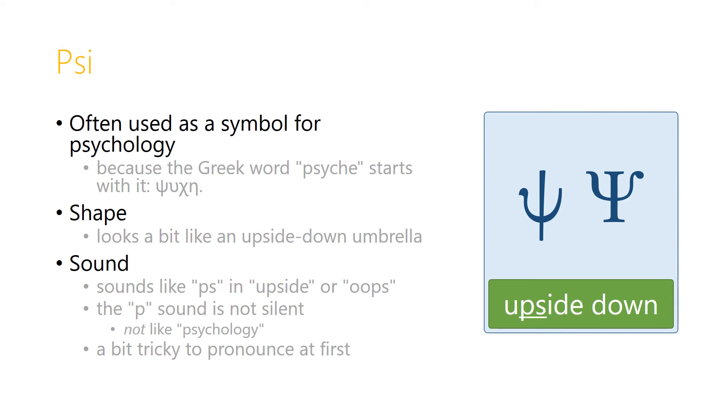Now, the P is never silent like in psychology. It's always pronounced like in upside down, and this can be a tricky combination for English speakers to pronounce at the beginning of a word. So you might need to practice this a little bit, to say ps, ps, and then say things like psuche. But it's important to distinguish the psi from the simple s sound that sigma makes.